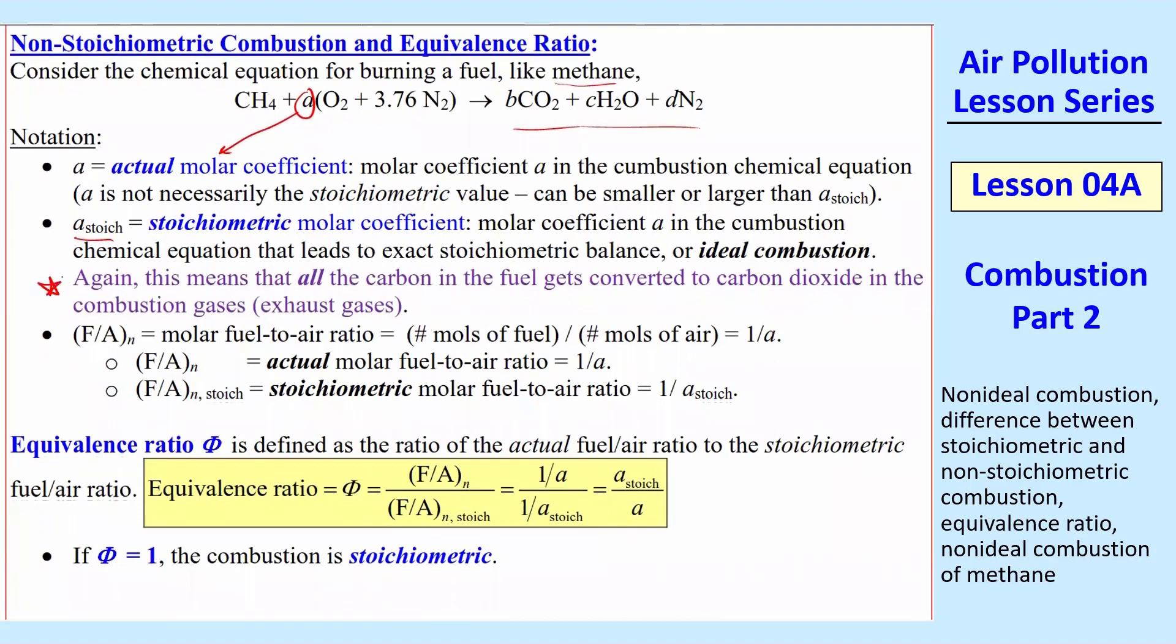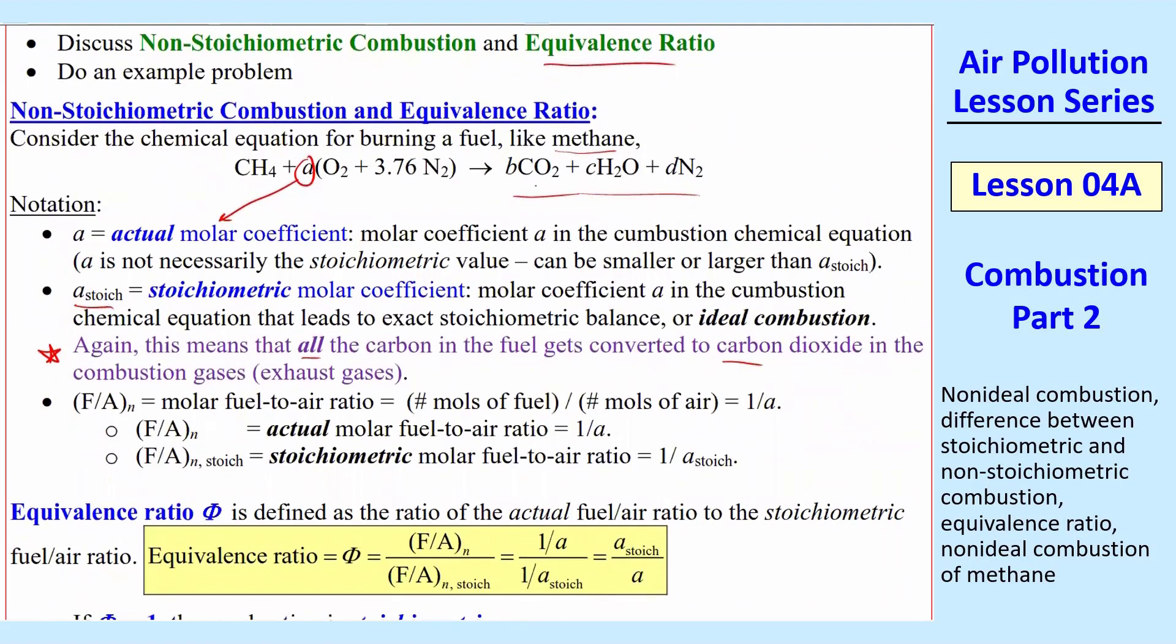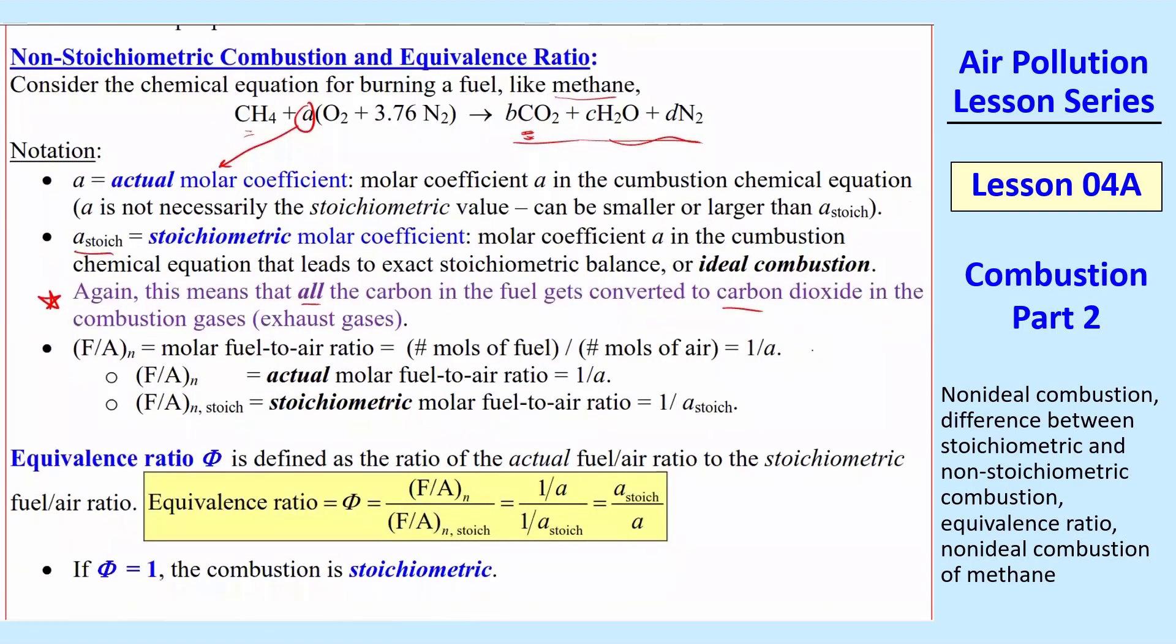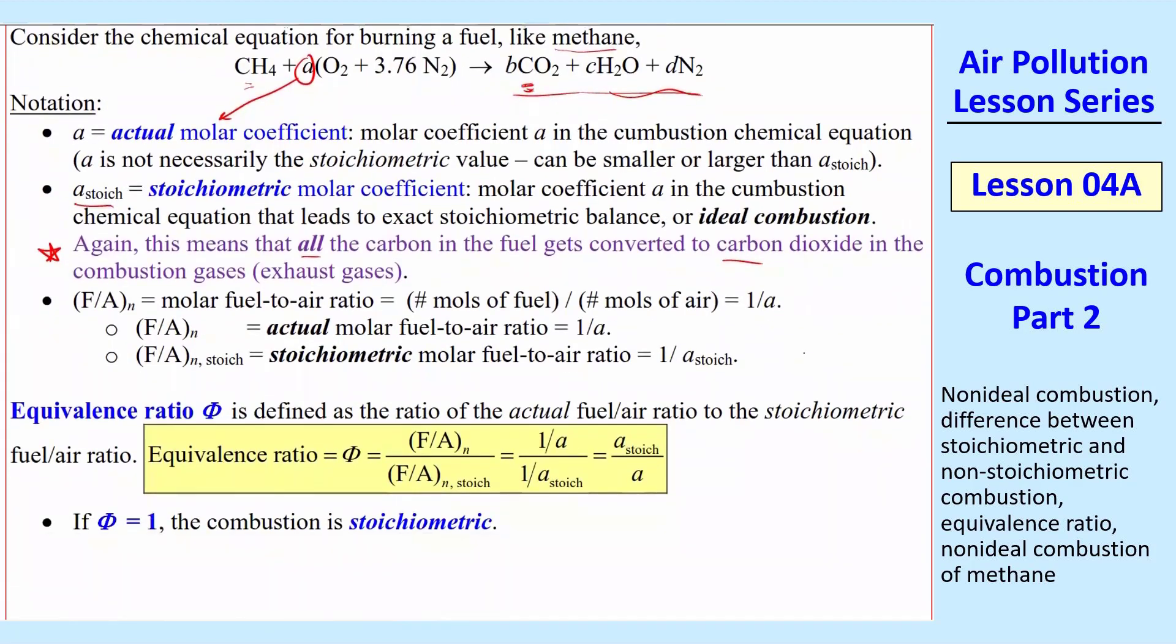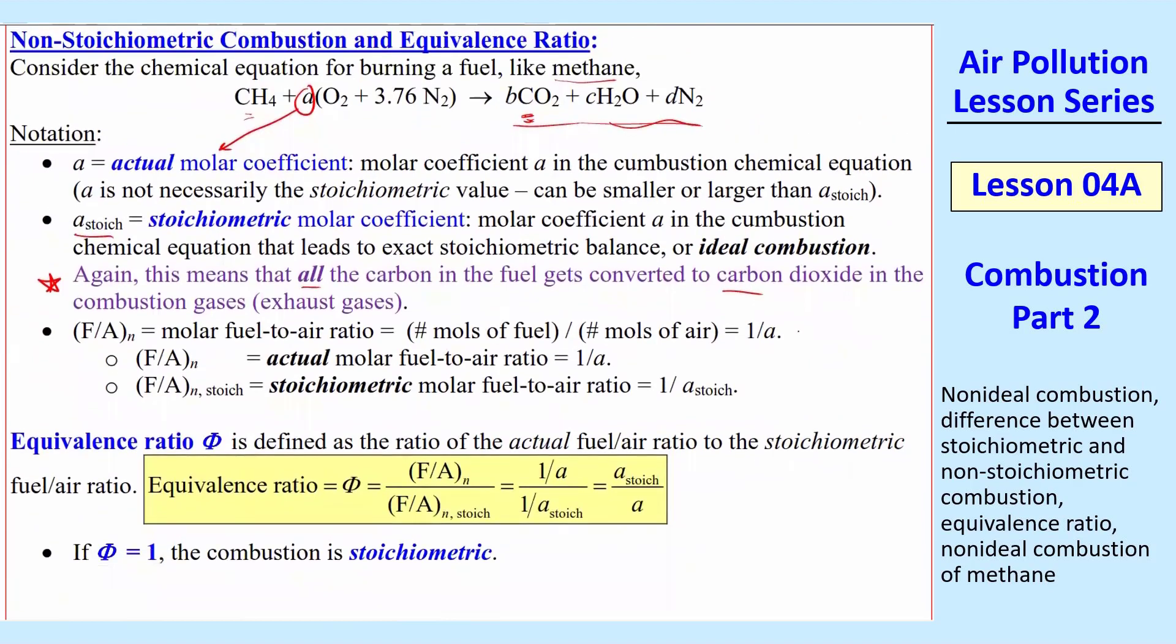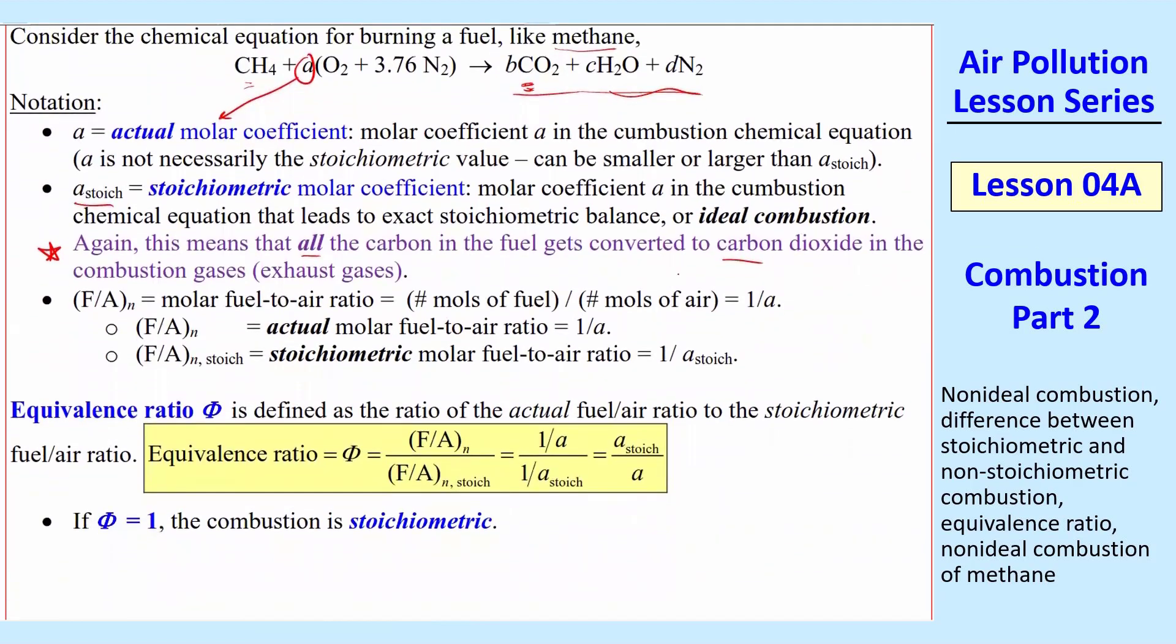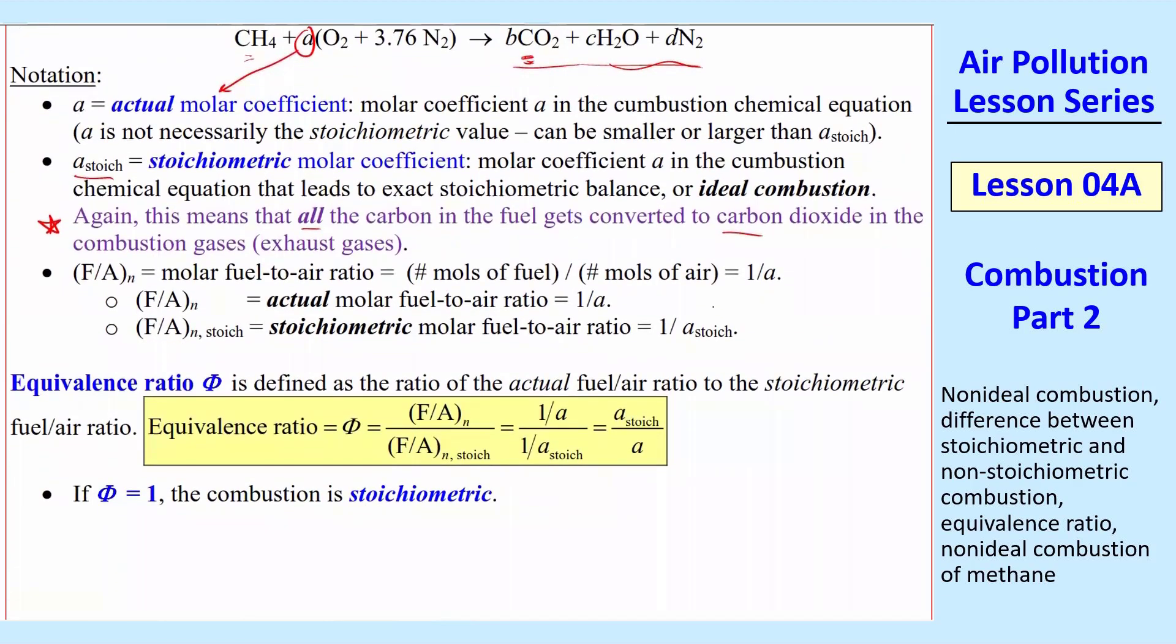This A molar coefficient is the actual molar coefficient in a combustion equation. It may not necessarily be stoichiometric, but we're still going to call it A. And then we have these products of combustion for the ideal case. We're going to define A stoic as the stoichiometric molar coefficient. Whenever A is equal to A stoic, that's a stoichiometric combustion, ideal or balanced combustion.